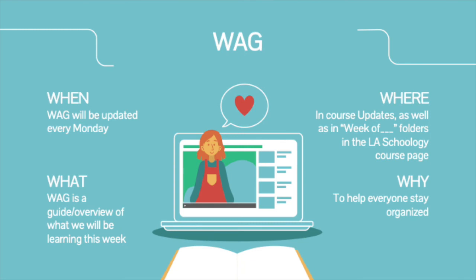The Week at a Glance, or the WAG, is a guideline and overview of what we will be learning in class each week. It will be updated every Monday and will always live in Course Updates as well as in the folder for the current week on the Language Arts Schoology page. The purpose of the WAG is to help everybody stay organized.